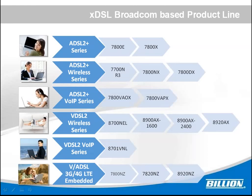There are six categories. The first would be ADSO 2+, the second ADSO 2+ with wireless, and the third ADSO 2+ with VOIP. The last one would be VDSO with 3G/4G LTE module embedded. Basically, this product line is suitable where the main interface is DSO, but they need data security or reliability to keep the connection always on.